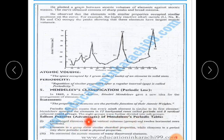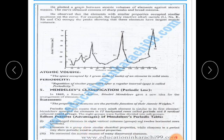Mendeleev arranged elements in 8 vertical columns (groups) and 12 horizontal rows (periods). Elements in a group show similar chemical properties, while elements in a period show a periodic trend in physical properties. He also corrected the atomic masses of many previously discovered elements.